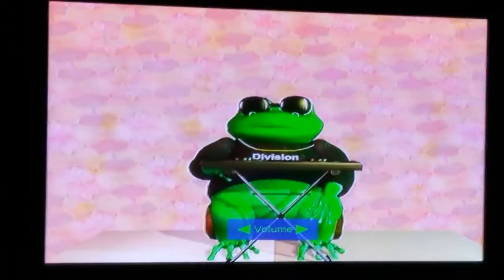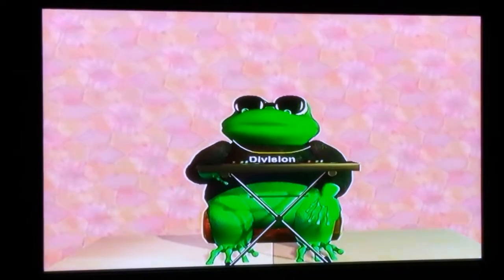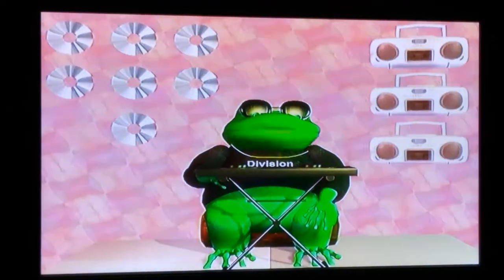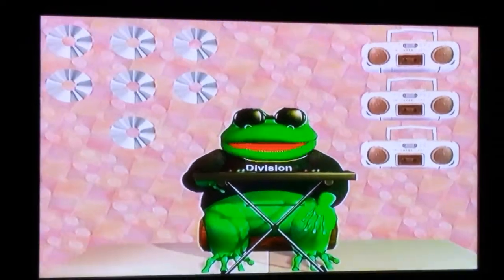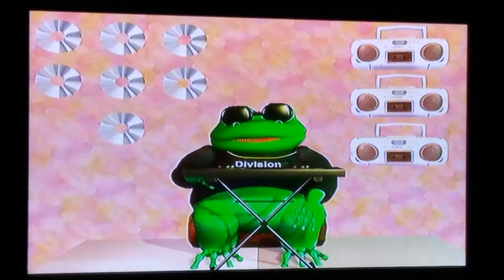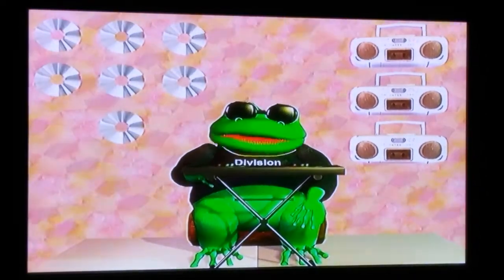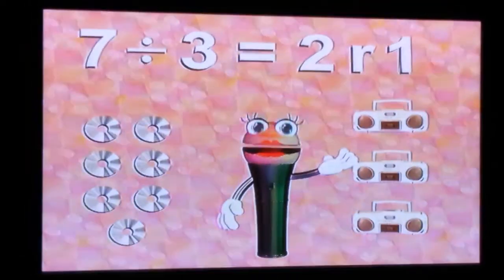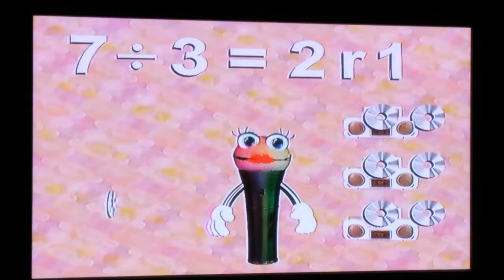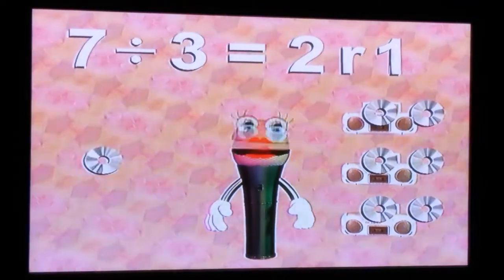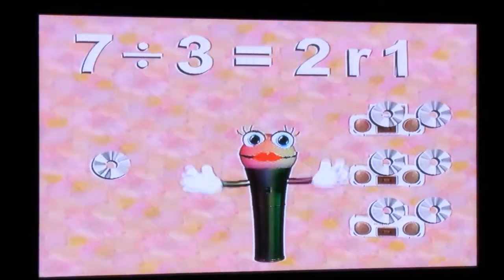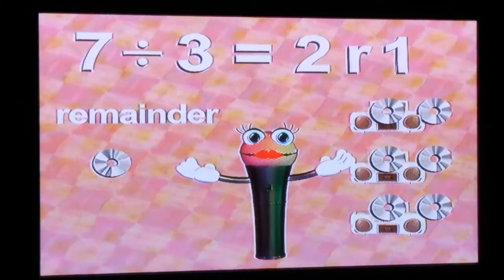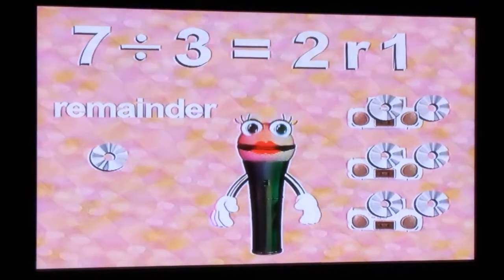I have seven CDs and three jam boxes. What if I wanted to put an equal number of CDs beside each jam box? Six divided by three would equal two, but seven divided by three is two with one left over. The one left over is called a remainder. The way you write the remainder is to put an R before the number that is the remainder.